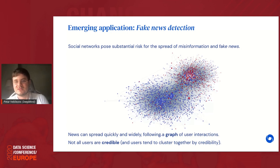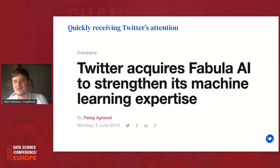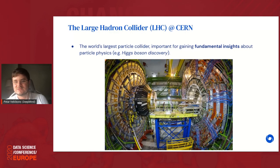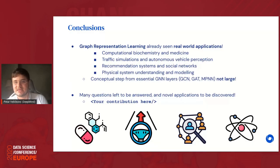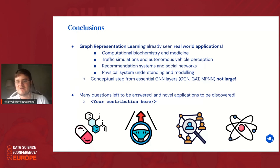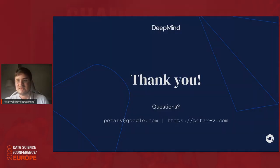GNNs are also being applied for fake news detection — this was done by the Fabula AI startup acquired by Twitter — and at the Large Hadron Collider to detect physics events of interest. In conclusion, graph representation learning has already seen substantial real-world deployment across drug discovery, COVID-19 treatment, traffic prediction, autonomous vehicles, and recommendation systems. The conceptual step from core GNN layers to real-world applications is not large, and many questions and novel applications remain to be discovered.